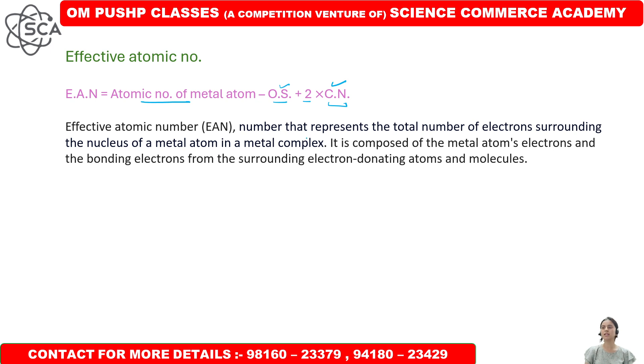To calculate the Effective Atomic Number, we have a simple formula: EAN = atomic number of metal minus oxidation state plus 2 multiplied by coordination number. We know how to calculate both the coordination number and the oxidation state. The Effective Atomic Number represents the total number of electrons surrounding the nucleus of the metal atom in a metal complex.